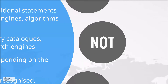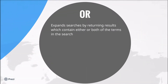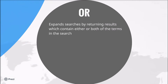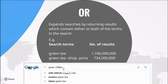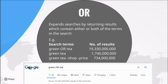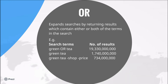The third Boolean operator OR, unlike the other two, is used to expand rather than limit searches by returning results which contain either or both of the terms in the search. So taking the results I had for green tea and this time searching for green OR tea, I get many more results — 19 billion — because this is all the results for green plus all of the results for tea. In practice, this operator is much less useful because generally you will have too many results and you need to find a way to limit or reduce them rather than expand them.